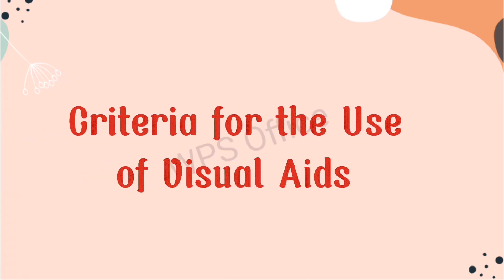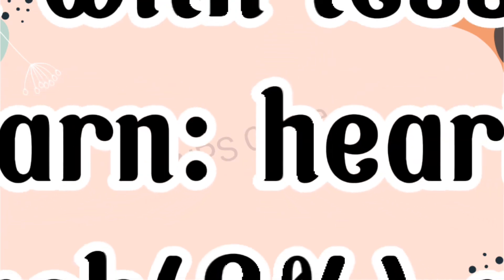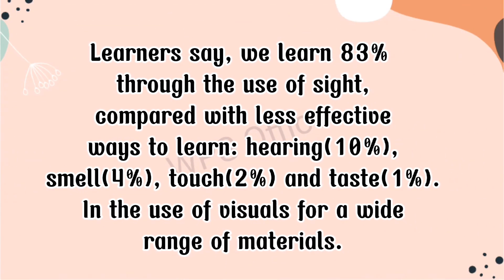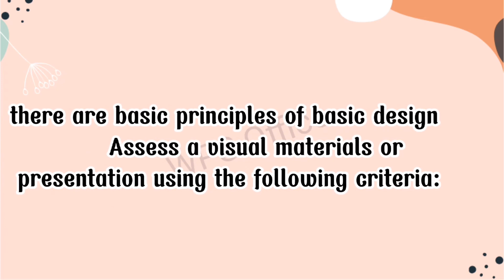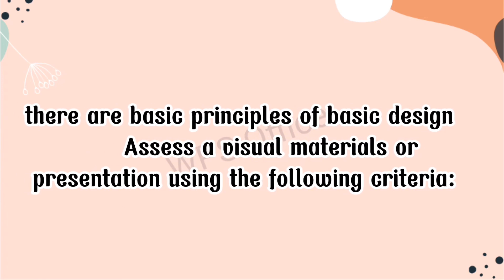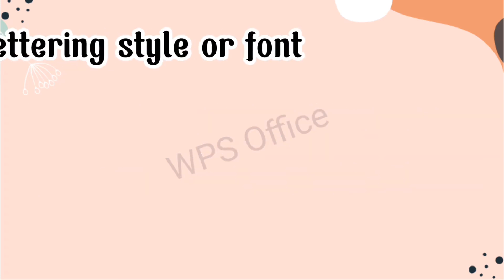Now let's discuss the criteria for the use of visual aids. Research shows we learn 83% through sight, paired with less effective ways: hearing at 10%, smell at 4%, touch at 2%, and taste at 1%. For a wide range of visual material, there are basic principles of design. When assessing visual materials such as a transparency or slide, use the following criteria.